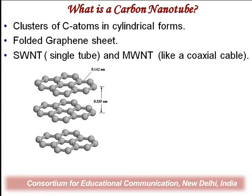The sheet formed by carbon molecules is known as the graphene sheet, which is used to prepare carbon nanotubes. Carbon nanotubes are also allotropes of carbon, discovered after the discovery of Buckminster fullerene. They consist of clusters of carbon atoms in cylindrical form. Carbon nanotubes are of three types, of which two are most prominent: SWNT (single-wall carbon nanotube), DWNT (double-wall carbon nanotube), and MWNT (multi-wall carbon nanotube).